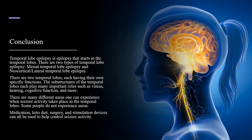In conclusion, temporal lobe epilepsy is epilepsy that starts in the temporal lobes. There are two types: mesiotemporal lobe epilepsy and neocortical lateral temporal lobe epilepsy. There are two temporal lobes, each having their own specific functions. The substructures of the temporal lobe each play many important roles such as vision, hearing, cognitive function, and more. There are many different auras one can experience, though some people do not. Medication, keto diet, surgery, and stimulation devices can all be used to help control seizure activity.